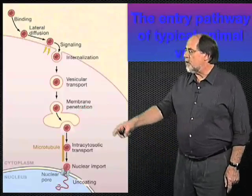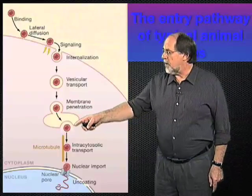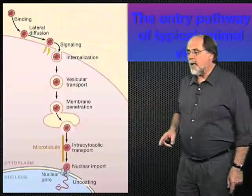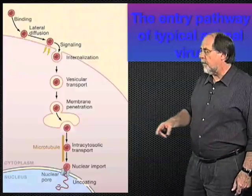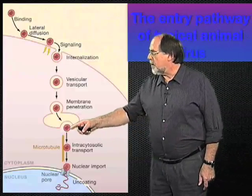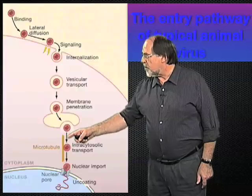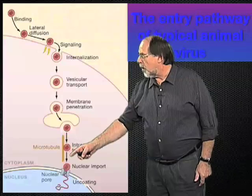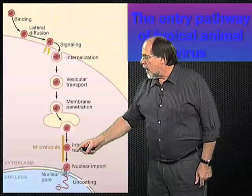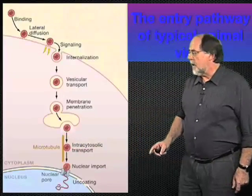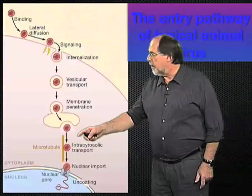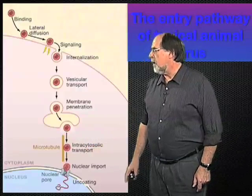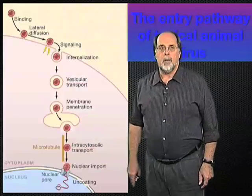The next step, once the virus has made it to the cytosol, is movement into the location where uncoating and replication can take place. For most DNA viruses, that involves transport along microtubules to the nucleus and to the nuclear pore complex, and through different mechanisms the genome is transported through the nuclear pore into the nucleus and uncoated in the process.